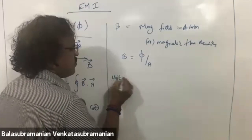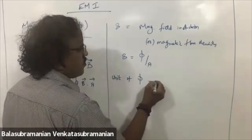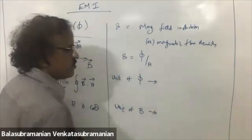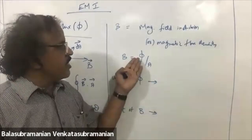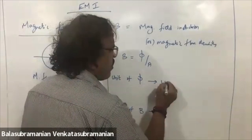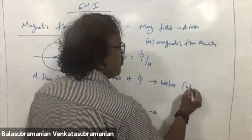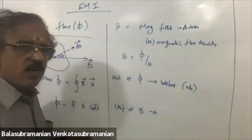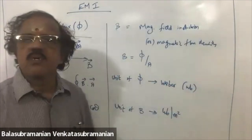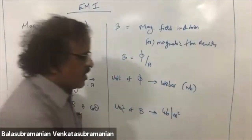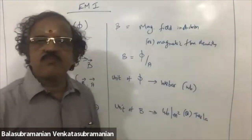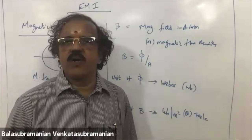The unit of phi and the unit of B: the unit of phi is represented by Weber, that is Wb. So the unit of B will be Weber per meter square. Another unit is Tesla. So the units of B are Weber per meter square, or Tesla.